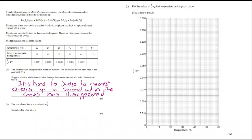What we're looking for here is that it's really hard to judge the nearest 0.01 seconds when a cross is disappearing. We're also dealing here with reaction time, about the time it takes for you to decide you're going to press the button. So to the nearest second does make considerably more sense.